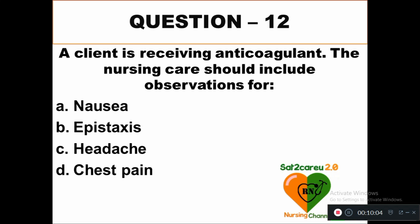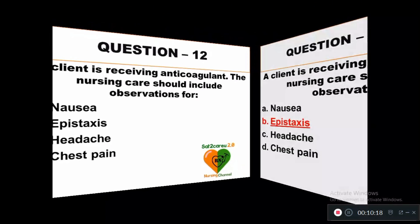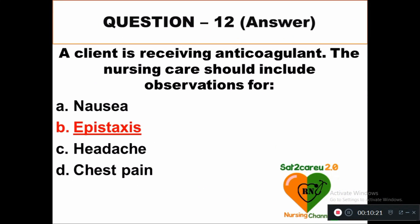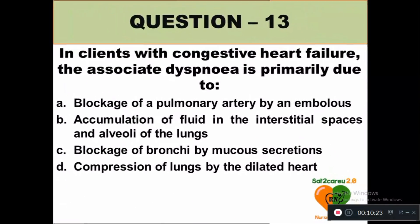Question 12: A client is receiving anticoagulants. The nursing care should include observations for: option A nausea, option B epistaxis, option C headache, option D chest pain. The right answer is option B — epistaxis.